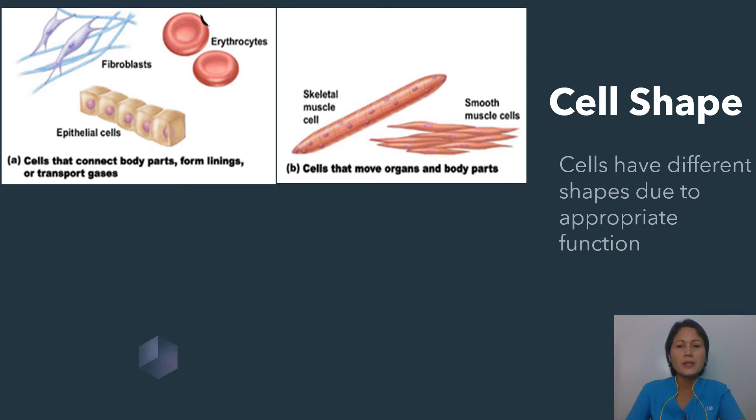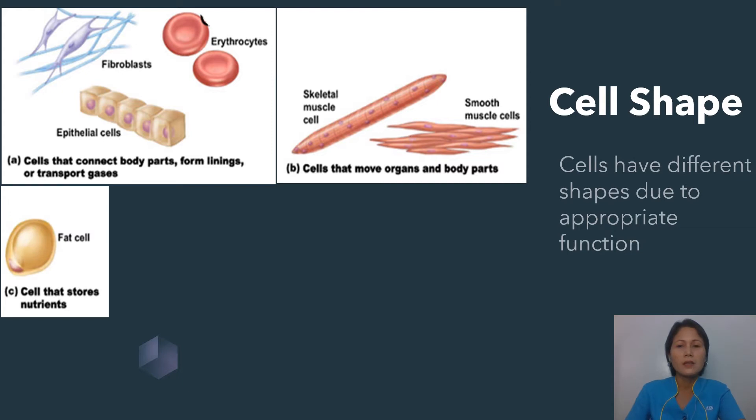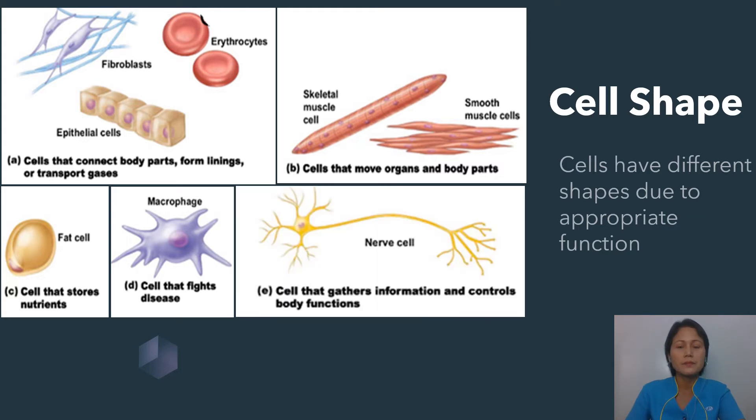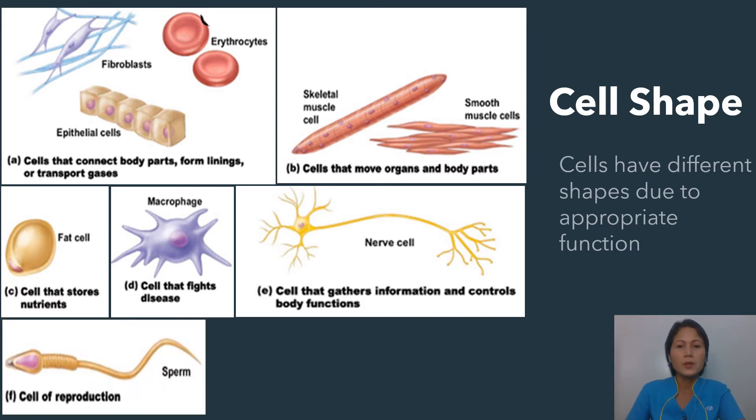Myocytes, muscle fibers or muscle cells, are long tubular cells and have the responsibility of facilitating movement of an organism. Fat cells form storage of nutrients. Irregular shapes of macrophages are for fighting diseases. Nerve cells gather information and control body functions. Sperm cells and egg cells are for reproduction.